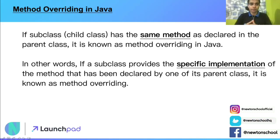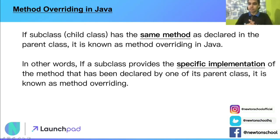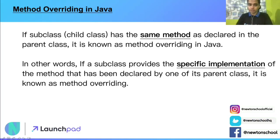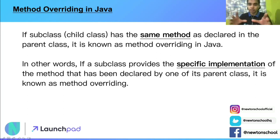Starting with the first definition — what is method overriding? If a subclass or child class has the same method as declared in the parent class, it is known as method overriding in Java. In the previous video, we discussed about inheritance, where we have a parent class and a child class. The child class inherits some properties or attributes of the parent class. So if that child class, also called the subclass, has the same method as declared in the parent class, it is known as method overriding in Java.